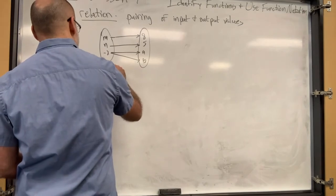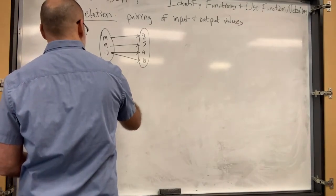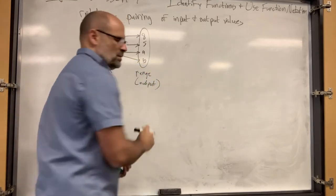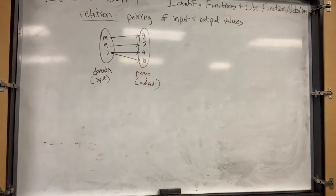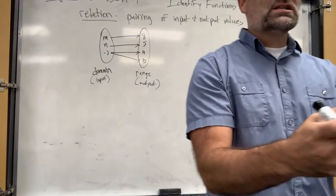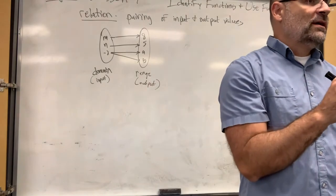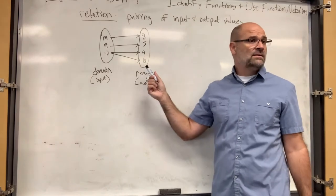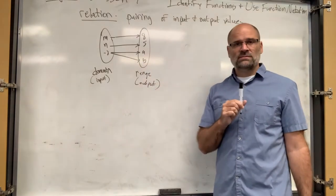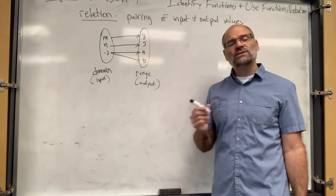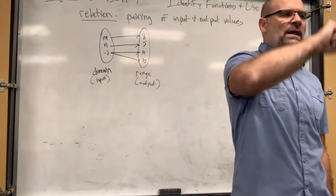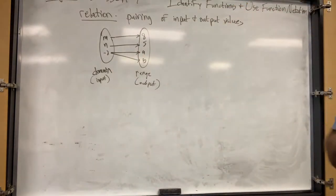A function is a specific type of relation. The domain is the input values, the range is the output. Think of it like a machine - if you put something into a machine you expect to get one result. If that machine is unpredictable and sometimes goes to A and sometimes makes a B, then that is not a functional machine. In a function, every input goes to only one output.